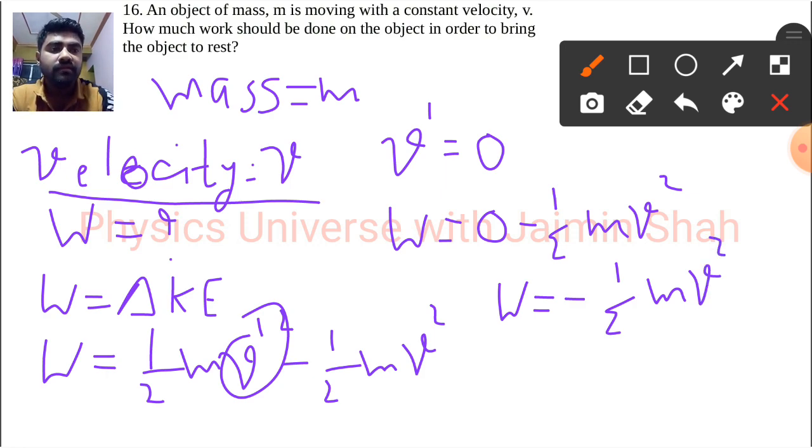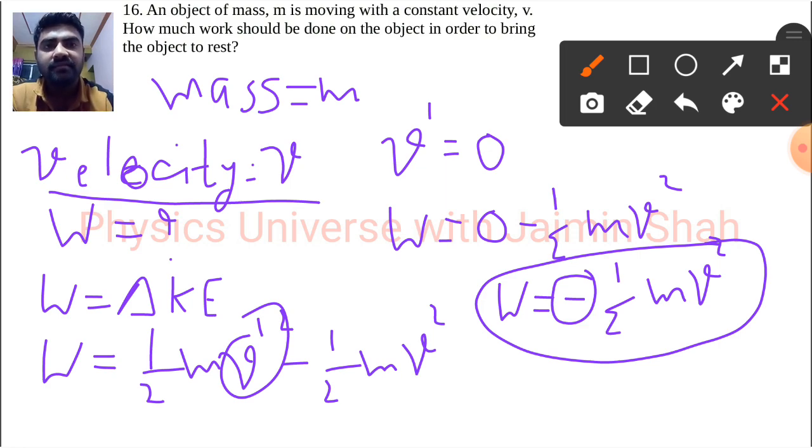So this much work we have to do in the opposite manner of whatever the object is moving. If for example the object is moving in the right hand side direction, we have to apply force in the left hand side direction to stop that. Because this negative sign indicates we have to apply exactly the same force in the opposite direction of that motion.